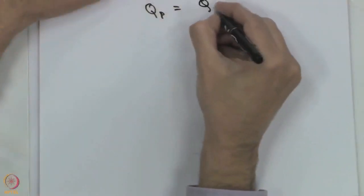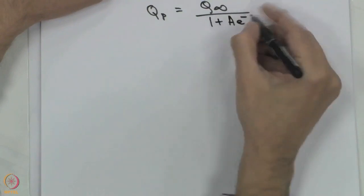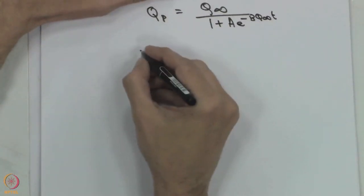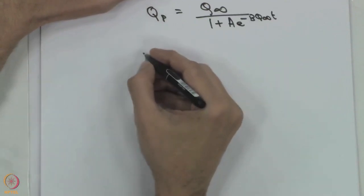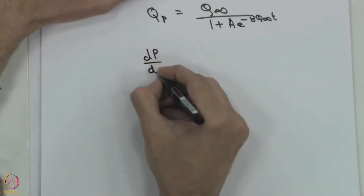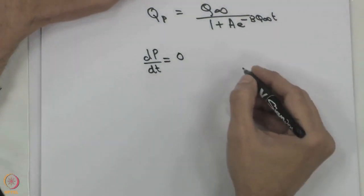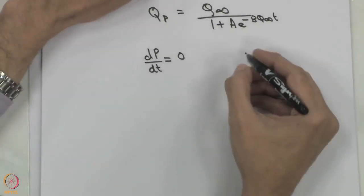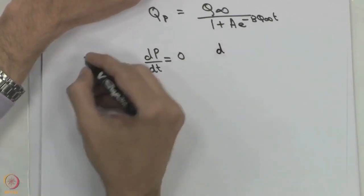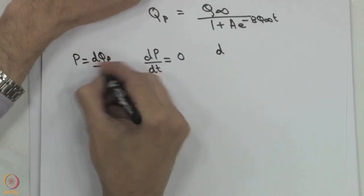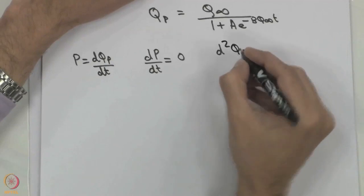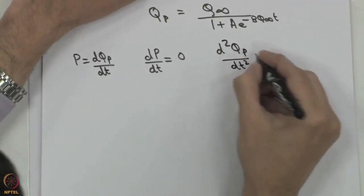Given Qp = Q infinity / (1 + A × e^(−B × Q infinity × T)), we want to find the time when production is maximum. When production is maximum, it is a stationary point where dP/dT = 0. We seek the point of inflection where d²Qp/dT² = 0.